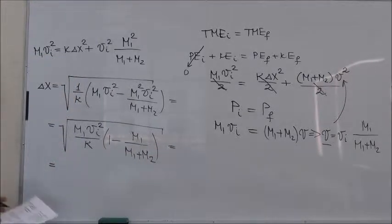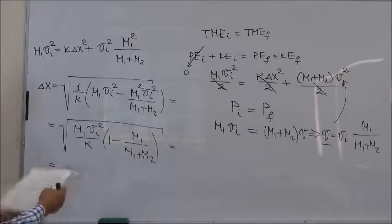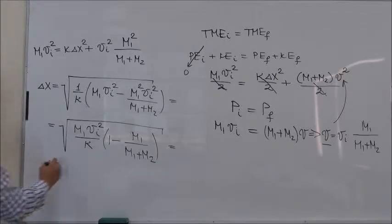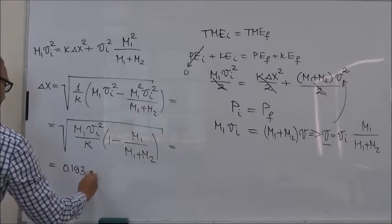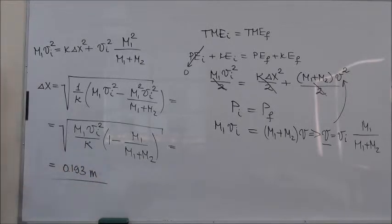Now if you substitute for the numbers, and the numbers are given in the problem, this gives you 0.193 meters or 19.3 centimeters, and that's the maximum compression of the spring.